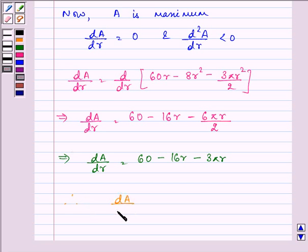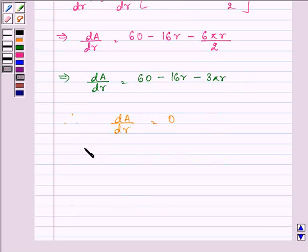Now, on putting this value equal to 0, let us find out the value of r. We have, after taking r common from here, we are left with, in the bracket, 16 plus 3 pi r, this implies, 60 upon 16 plus 3 pi is equal to r.